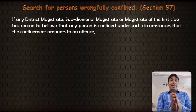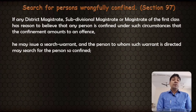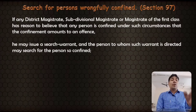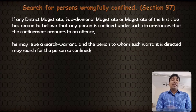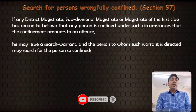Section 97 deals with Search for Person Wrongfully Confined. If any District Magistrate, Sub-Divisional Magistrate, or Magistrate of First Class has reason to believe that any person is confined under such circumstances that the confinement amounts to an offence, he may issue a search warrant and the persons to whom such warrant is directed may search for the person so confined.